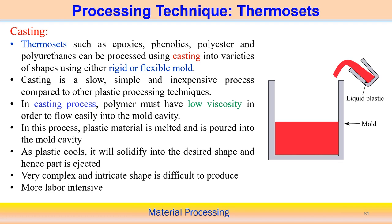In the casting process, we first heat the polymer to reach a low viscosity state. When the viscosity becomes low, it is easy for the liquid polymer to flow into the intricate parts of the mold cavity. The material is melted and poured into the mold cavity, allowed to solidify and take a particular shape, and then ejected from the mold cavity.